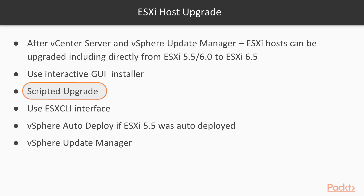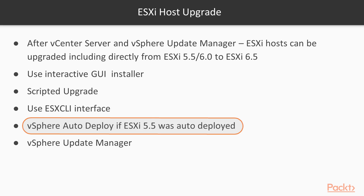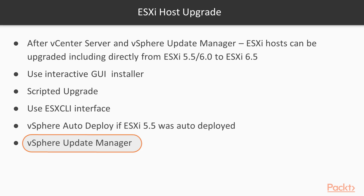A scripted upgrade is possible, but writing, debugging, and maintaining scripts is unnecessary when better options exist. The ESXi CLI interface is another option, though it would only be used in the most difficult circumstances. If your ESXi 5.5 was auto-deployed, you can use vSphere Auto Deploy to upgrade to version 6.5 using host profiles and the standard auto-deploy methodology. The recommended approach is to use the vSphere Update Manager, which is directly integrated with the vCenter Server Appliance version 6.5. Once at version 6.5, the integrated capabilities — auto-deploy, Update Manager, and high availability — will simplify future upgrades to ESXi version 7.